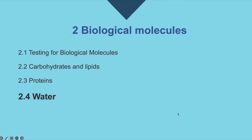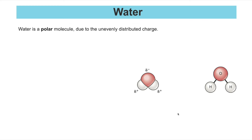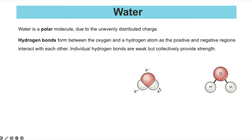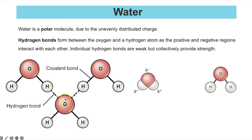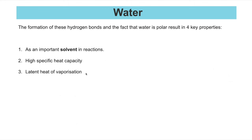The final biological molecule is water. Water is a polar molecule due to uneven distribution of charge: oxygen has a slight negative charge (δ–) and the two hydrogen atoms have a slight positive charge (δ+). This polarity enables hydrogen bonds to form between different water molecules — between the oxygen of one and the hydrogen of another — and it is the formation of those hydrogen bonds that gives water its key properties.